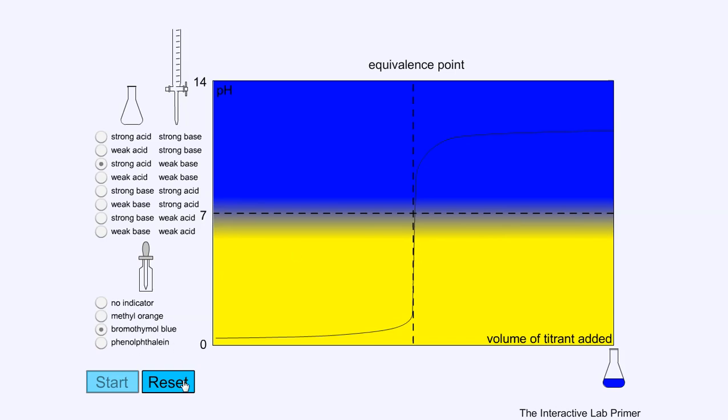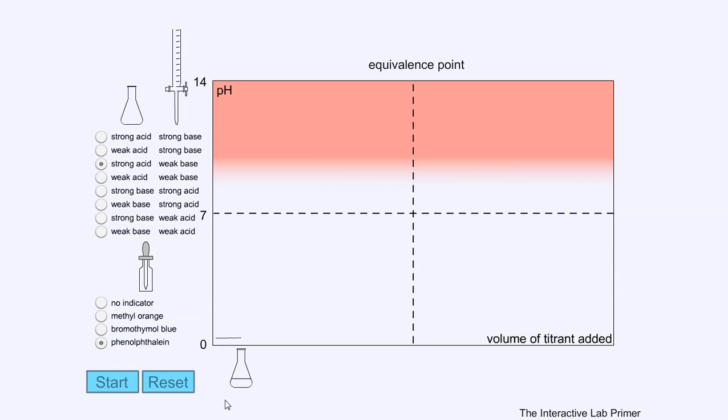Let's try again with phenolphthalein. Notice that it is colorless and stays colorless for quite a while, even at the equivalence point, before it changes to pink. So this is not a suitable indicator.